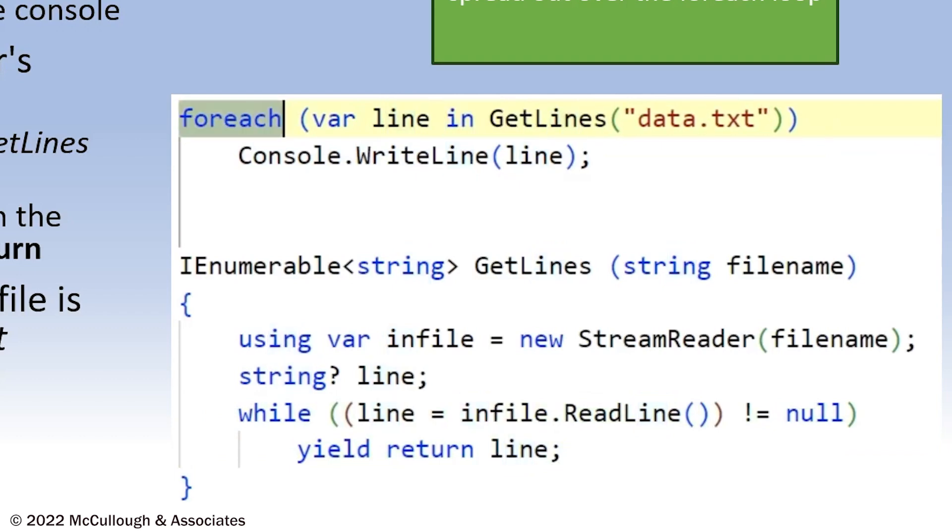The iterator then remembers that's the location where it got, so the next iteration of a foreach causes the next execution of the while loop. This will continue until we hit end of file and the while completes. The input file will be disposed or closed and a yield break is automatically executed and that causes the foreach to complete because when it calls MoveNext, MoveNext returns false, saying there are no more elements.